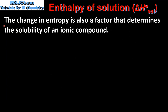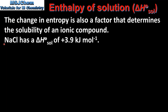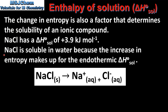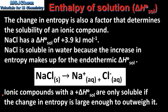The change in entropy is also a factor that determines the solubility of an ionic compound. For example, sodium chloride has an enthalpy change of solution of 3.9 kJ per mole. Sodium chloride is soluble in water because the increase in entropy makes up for the endothermic enthalpy change of solution. One mole of solid ionic compound dissolves to form 2 moles of aqueous ions — an increase in entropy, since aqueous ions have higher entropy than solids. To summarize, ionic compounds with a positive enthalpy change of solution are only soluble if the change in entropy is large enough to outweigh it.